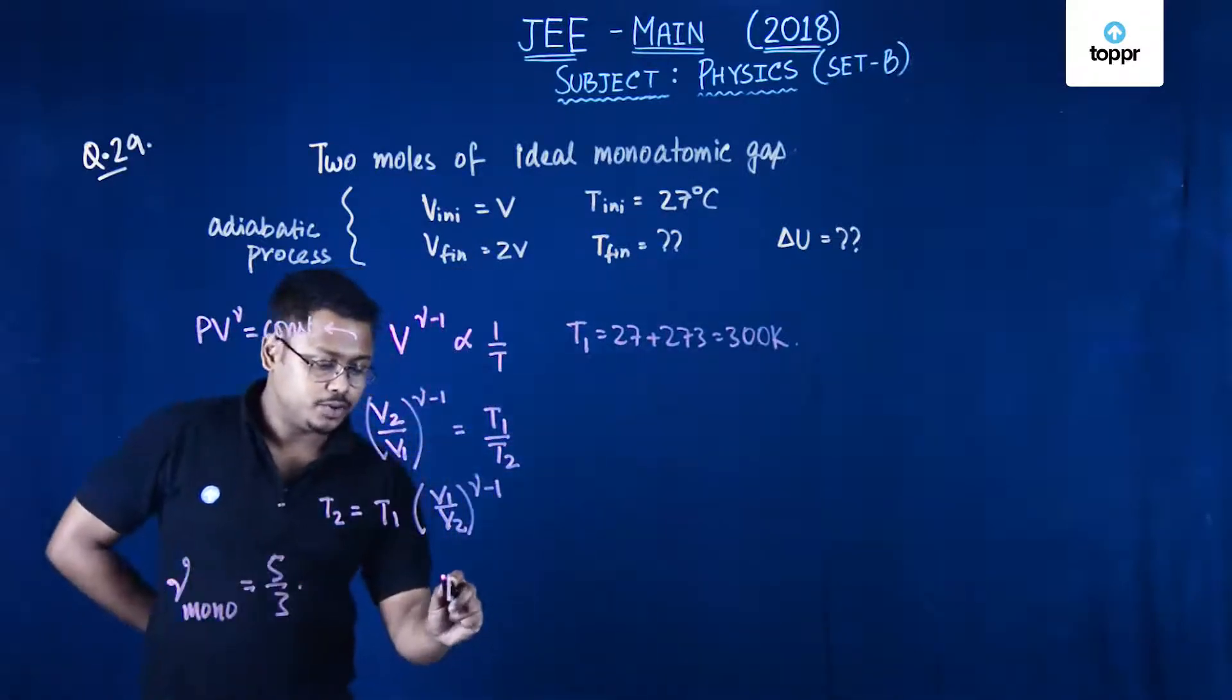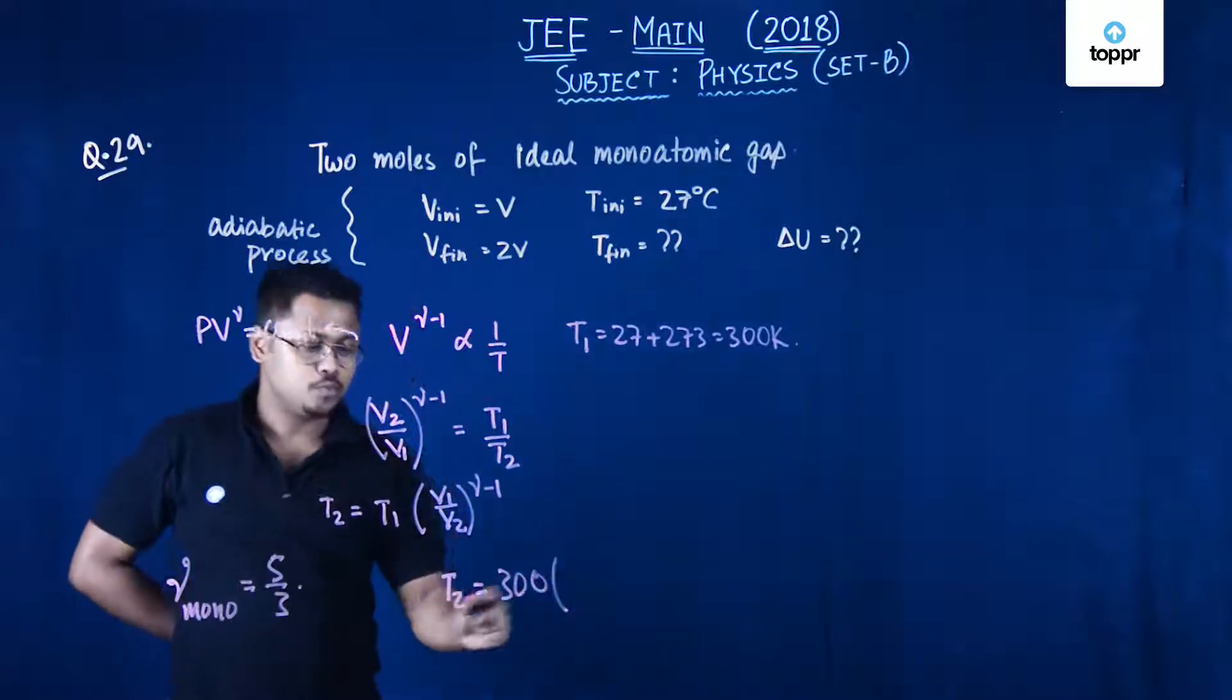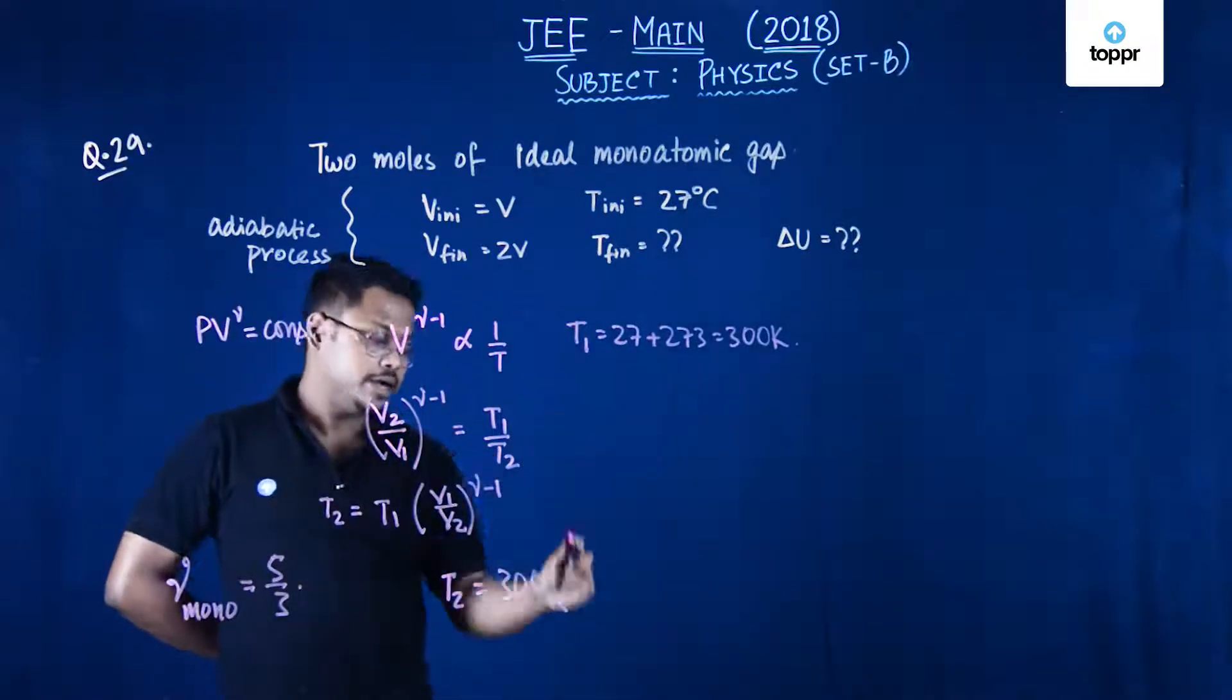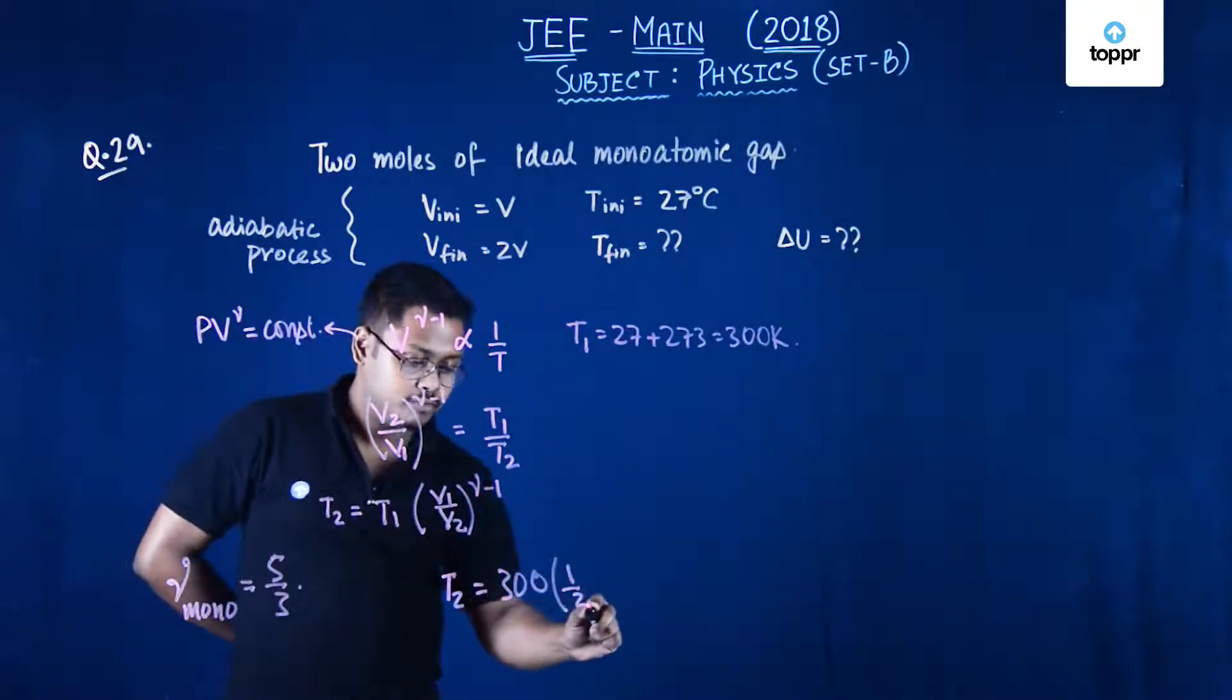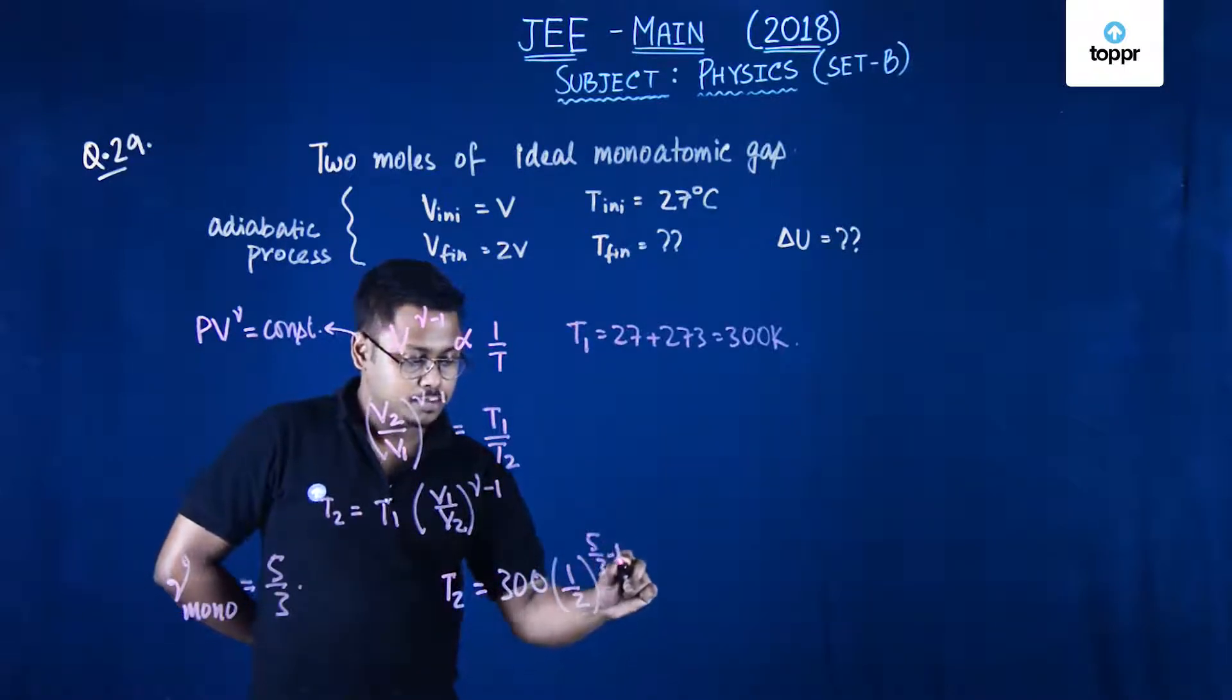So from this particular equation if you put the value, that is 300 into V1 is V by 2, that is half to the power 5 by 3 minus 1.